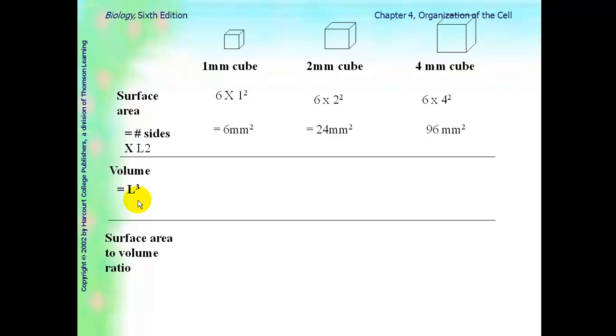Now, let's look at volume, which is length cubed. In a 1 millimeter cubed, it would be 1 cubed, or 1 millimeter cubed. In the 2 millimeter cubed, it is 2 cubed, or 8 millimeters cubed. And in the 4 millimeter cubed, it is 4 cubed, or 64 millimeters cubed. So, it makes sense that the larger cube has the most volume as well. Now, let's look at the ratio of this. If I take the ratio for the 1 millimeter cubed of surface area over volume, it is 6 to 1. If I look at the 2 millimeter cubed, it is 24 to 8, and I can reduce that to 3 to 1. And then, if I look at the biggest cell, 96 to 64, I can reduce that to 1 and a half to 1. So, overall, the ratio of surface area to volume, the smaller cube has the greatest surface area to volume ratio.